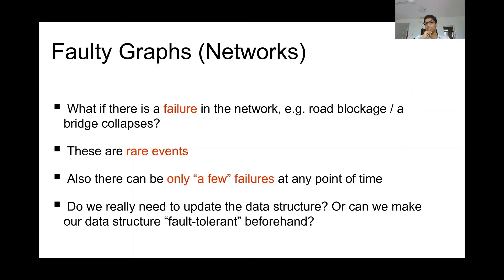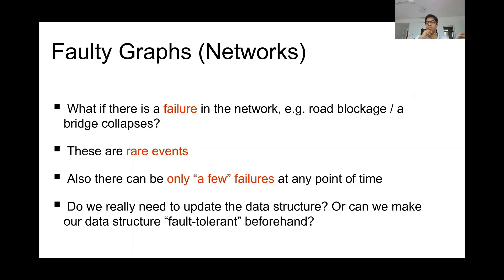Now if you place your query in the data structure, it should give you the correct answer even after a failure. Because if you use your original data structure and now suppose some failure happens — some road is blocked — and you place a shortest distance query, if it gives a path that uses that particular road which is currently blocked, then that is not a valid answer. You want something that avoids that particular edge. One could say: once the failure happens, I'll access the main map and update my data structure. But that is time consuming. So the question is: can you build your data structure in a way that it can tolerate a few faults, so that even if some failure happens in the map, you don't have to change the data structure — you just tell the data structure that this road is now blocked, and it gives you an alternate shortest distance path?